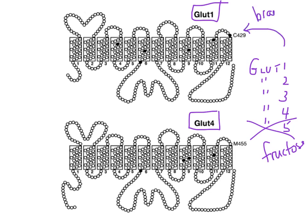If you look at the two receptors, not much is structurally different. GLUT1 is on many cells, whereas GLUT4 is regulated based on where it's placed — only on fat and skeletal muscle cells. How do we regulate the uptake of glucose? The way our body has figured out to do this is through the use of insulin.